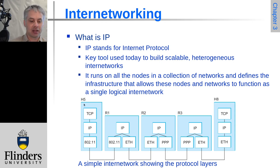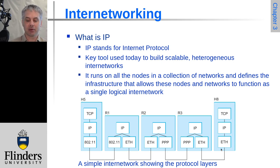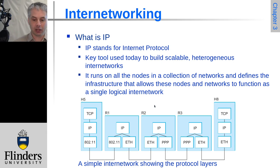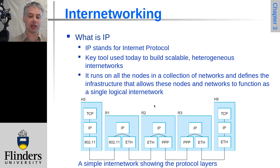Here we've had three different media types: 802.11 wireless, Ethernet, and a PPP dial-up link — very different networks with very different properties — yet the hosts at either end can communicate as if they were on the same network. This is the magic of internetworking; this is what makes the internet work.